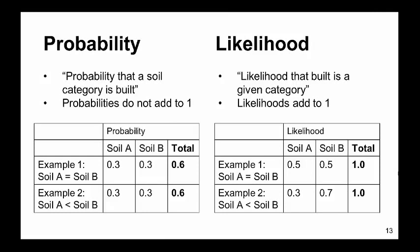One distinguishing feature between probability and likelihood is that the probabilities do not necessarily add to 1 across the categories of the explanatory variable, while the likelihoods always add to 1. Probability is the proportion of a category that is built, while likelihood is the proportion of built that is in a given category.